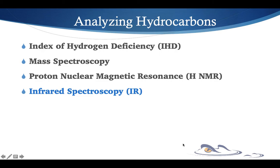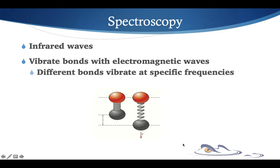So let's talk a little bit about infrared spectroscopy today. Infrared spectroscopy uses a different section of the electromagnetic wave spectrum and uses infrared waves. The infrared waves cause specific bonds to vibrate and resonate with that particular wave that's being sent in.